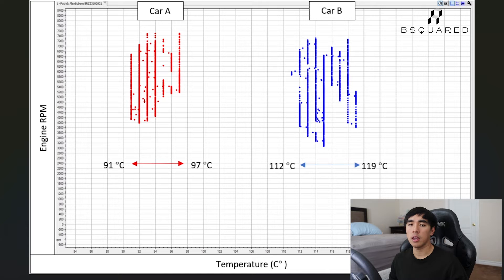The next graph is a histogram of engine oil temperature versus the RPM and this is just another graphical representation of the similar data during our hot lap. And you guys can see the spread of the overall temperature is tighter on the car with the oil cooler, 91 to 97, and the other car had a slightly higher range from 112 to 119 degrees.